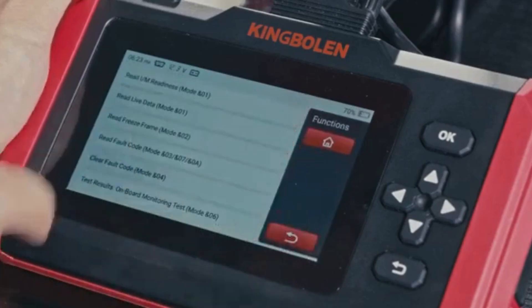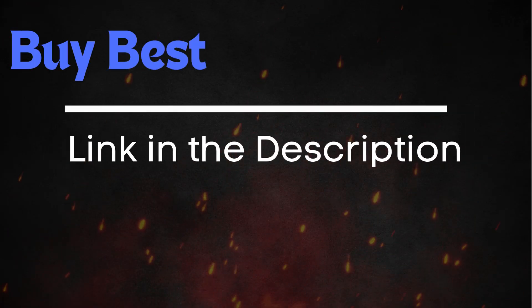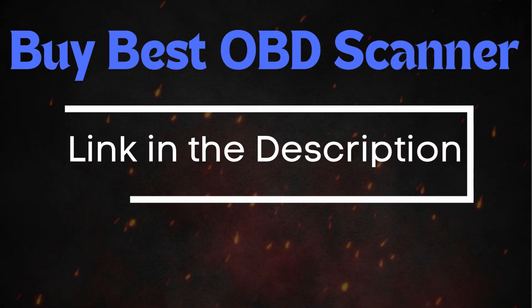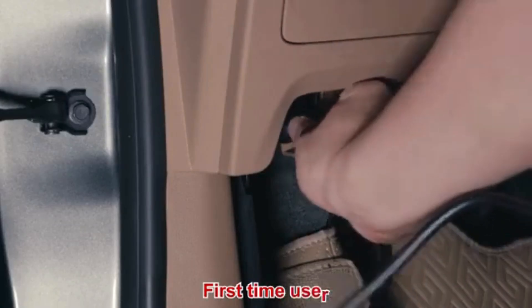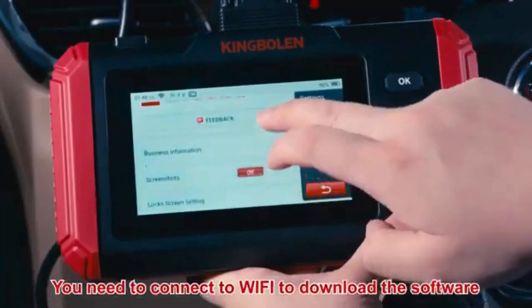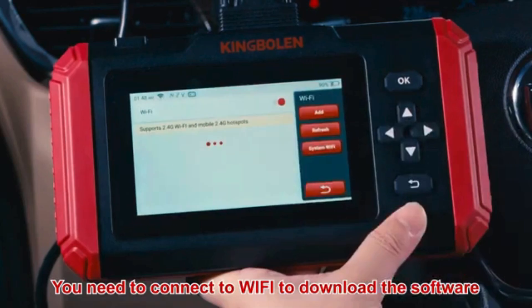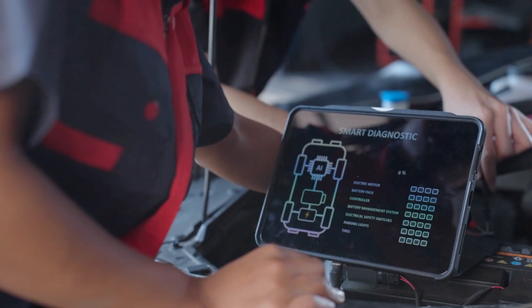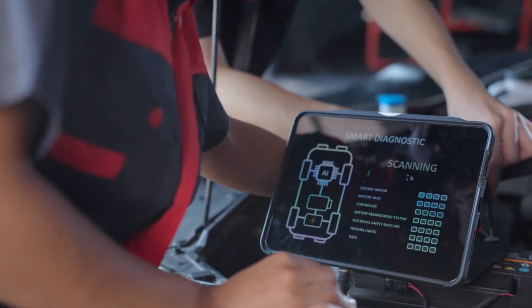To do this, you'll need an OBD-II scanner. Check out the link in the description for the best scanners out there. Simply connect the scanner to your vehicle, follow the instructions to clear the trouble codes, and see if the P000A code reappears.